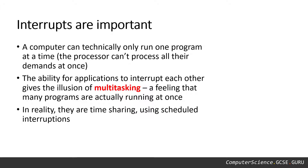Why are interrupts important? A computer can technically only run one program at a time. The processor simply can't process all the demands made on it by all the programs at once. The ability for applications to interrupt each other gives the illusion of multitasking — a feeling that many programs are actually running at once. In reality, they are time sharing using scheduled interruptions.